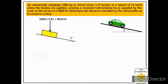Next we represent the normal pressure, labeled as N. The automobile was traveling down the incline and brakes were applied causing a total braking force of 5000 Newtons. This braking force acts against the motion, shown along the incline in the upward direction as 5000 Newtons.